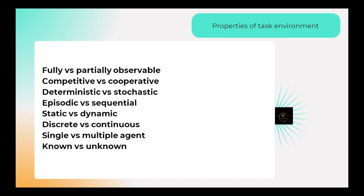The next property is episodic versus sequential. In an episodic environment, the current action does not depend on the previous state or affect the future state. For example, a robot arm picking spare parts from a bin — each part is checked independently; if defective, the arm removes it, then checks the next part. In a sequential environment, such as a checker game, each move affects future moves.